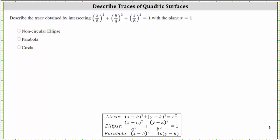We're asked to describe the trace obtained by intersecting the equation of the quadratic surface with the plane x equals one. We will take a look at this graphically as well as algebraically.